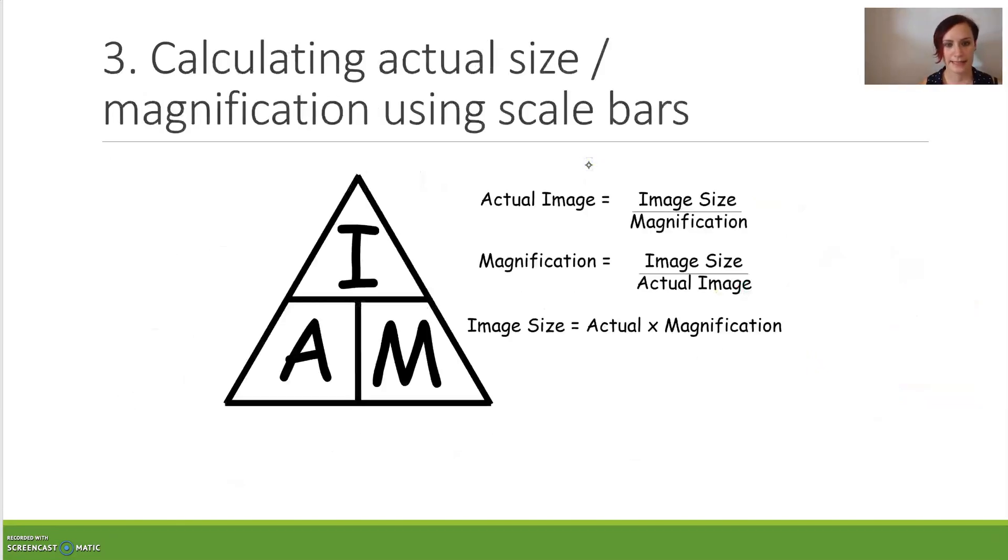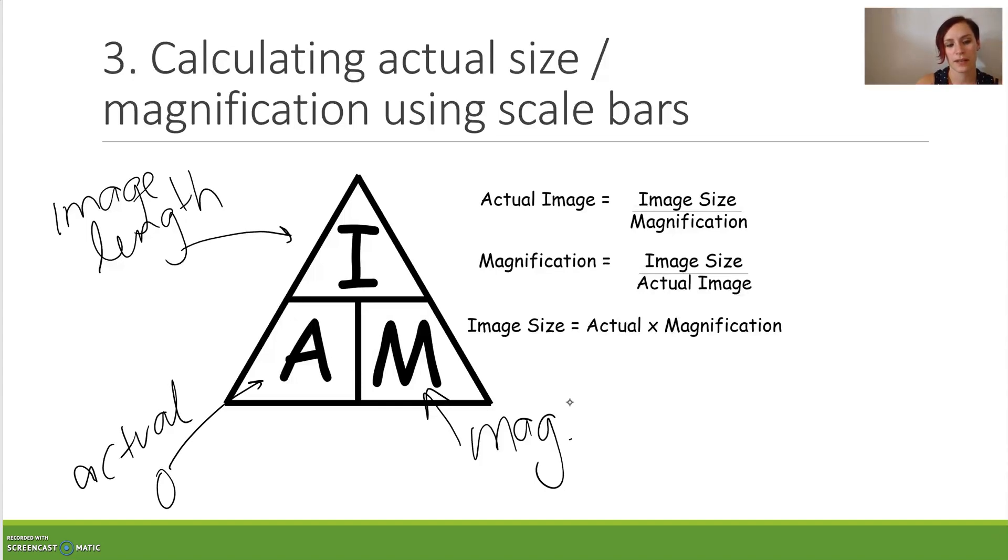Our next skill, we are calculating actual size or magnification using some scale bars. Now this is a really easy formula. If you can remember, it's the IAM triangle. That's what I call it, where I stands for the image length, M stands for our magnification, and A stands for the actual length of the object.